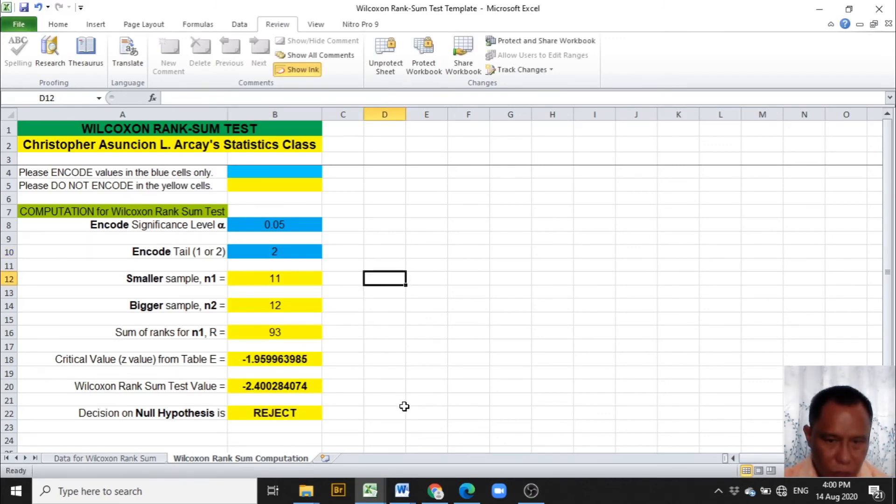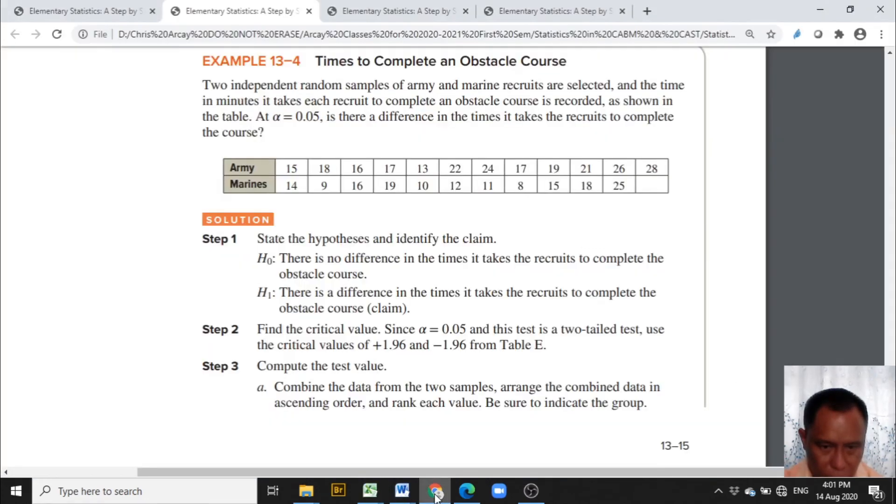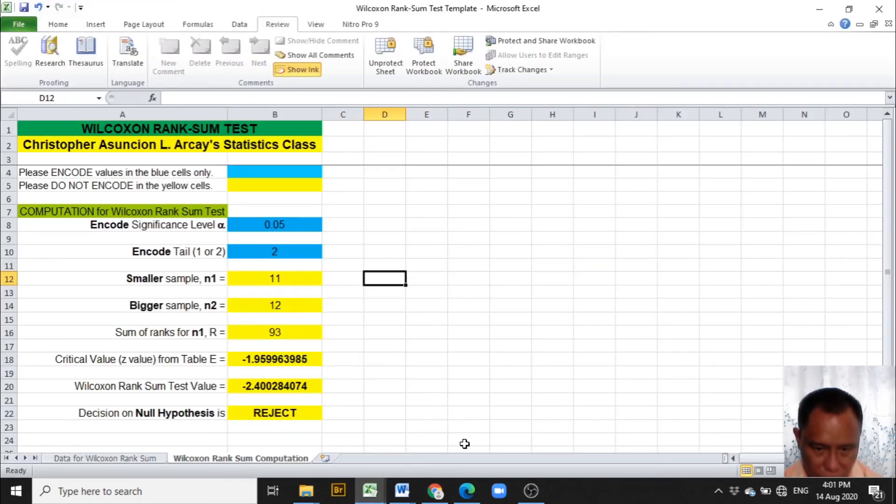Now the entries of this Excel template will be used particularly on the decision on the null hypothesis, which is reject. This means that for the problem, is there a difference in the times it takes the recruits to complete the course, the null hypothesis of there is no difference is rejected.